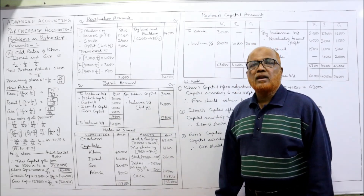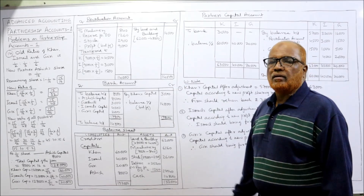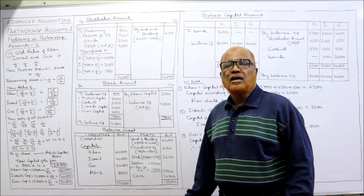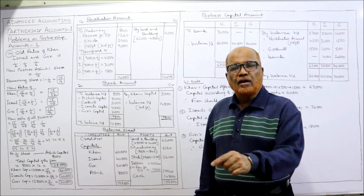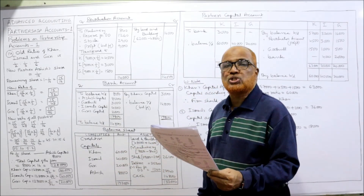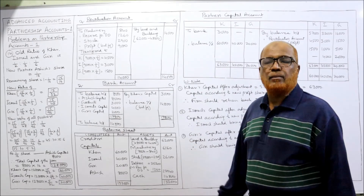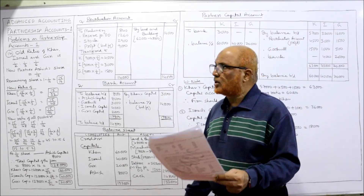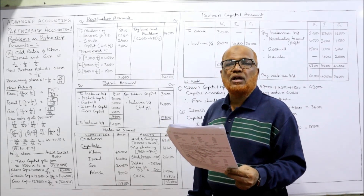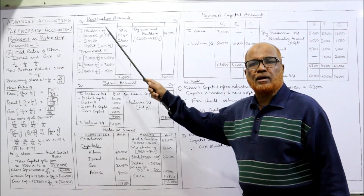Now we prepare the revaluation account. All incomes go on the credit side — if an asset is appreciated, credit the revaluation account; if depreciated, debit it. The appreciation is on land and building: book value was 48,000, required to be 62,000, so appreciation = 62,000 − 48,000 = 14,000 — credit side. Machinery depreciation: 7,000 × 12% = 840 — debit side.